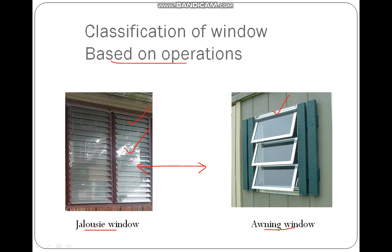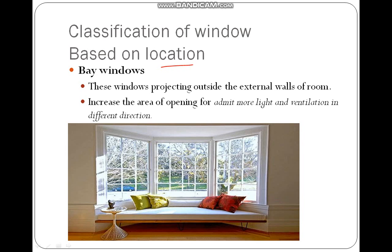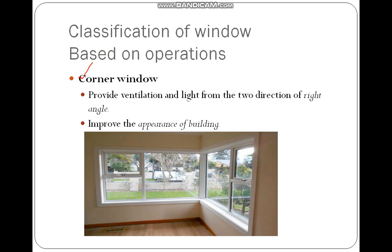Based on location, the first type is the bay window, which projects outward from the external wall of the room. As seen in the picture, it faces outward and increases the area of the opening, admitting more light and ventilation from different directions. Next is the corner window, provided for ventilation and lighting from two directions at a right angle. It also improves the appearance of the building, as the windows at the corner are visually appealing and allow good ventilation and light.